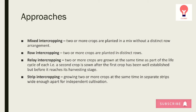In relay intercropping, the second crop is sown after the first one has been well established but before it reaches its harvesting stage. In strip intercropping, separate strips are maintained, wide enough apart for independent cultivation of each crop.